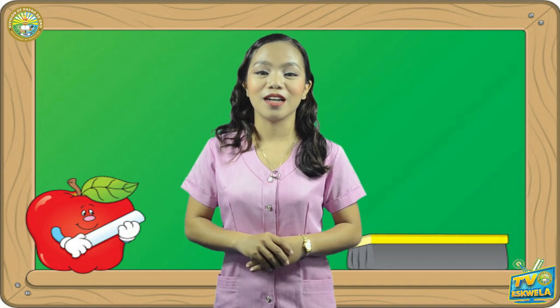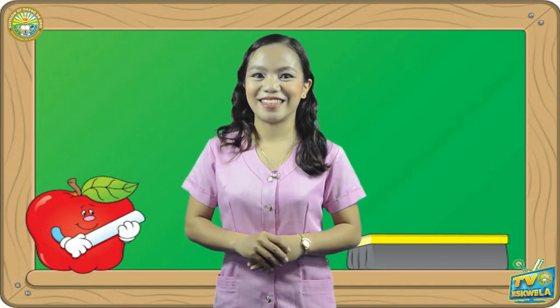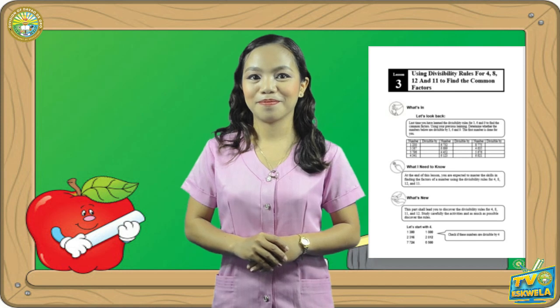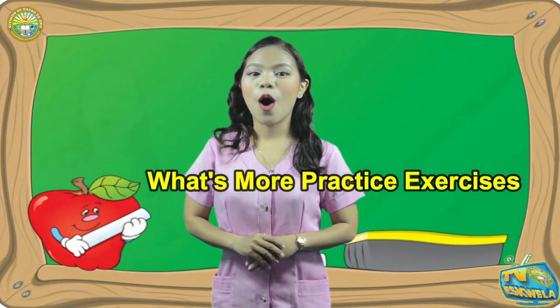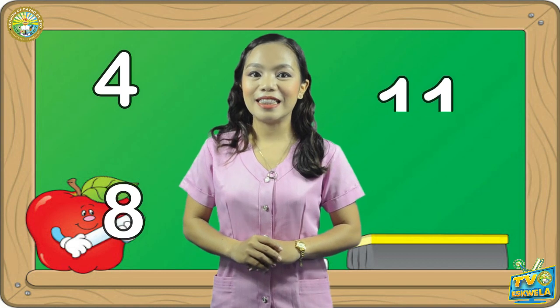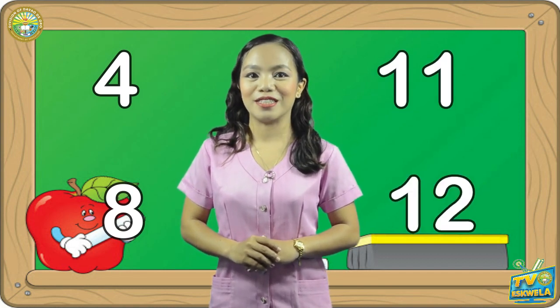Who among you got all the answers correct? Fantastic! Let's take on more practice exercises. I want you to look at the following exercises on your self-learning modules found on Lesson 3 of Mathematics 5, Quarter 1, Module 1, Lesson 1 to 4. Answer the exercises entitled What's More, Practice Exercises, What I Have Learned, and What I Can Do. Write your answers in your paper or notebook. Don't forget to keep them in your portfolio once corrected. Take your time to practice to master using the divisibility rules of 4, 8, 11, and 12 to find common factors. That is it for today.